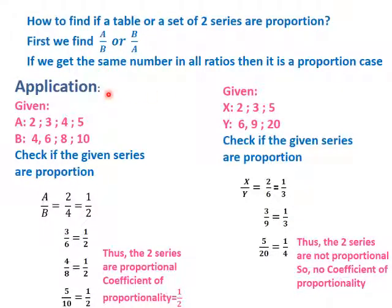Let us take applications. Given series a: 2, 3, 4, 5 and series b: 4, 6, 8, 10. We are going to check if the given series are proportion. We are going to find a over b. The first ratio is equal to 2 over 4, which simplifies to half. The second ratio is 3 over 6, which simplifies to half. The third ratio is 4 over 8, which simplifies to half. And the fourth ratio is 5 over 10, which simplifies to half. Thus, the two series are proportional, and the coefficient of proportionality is equal to half.